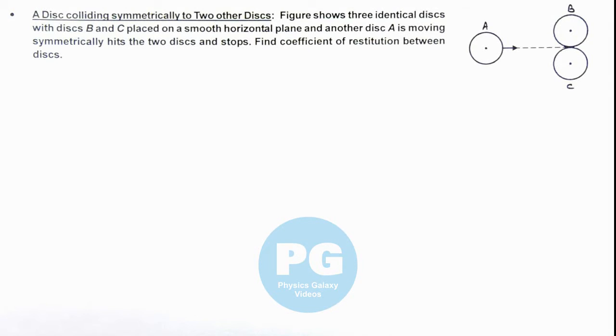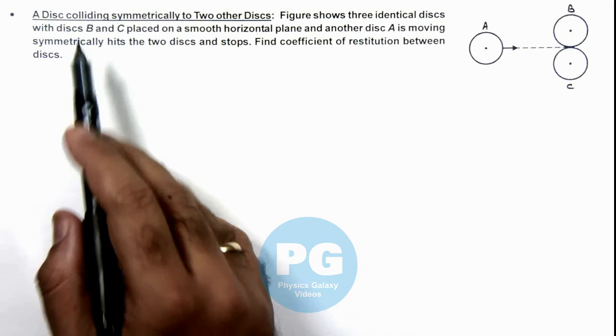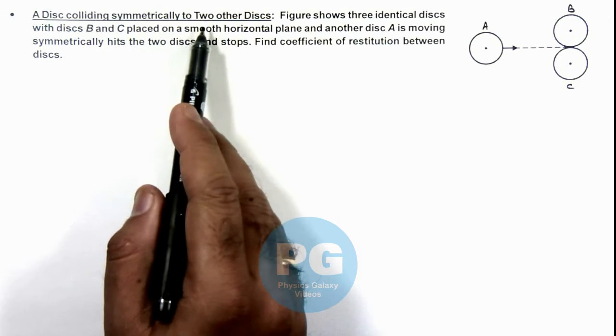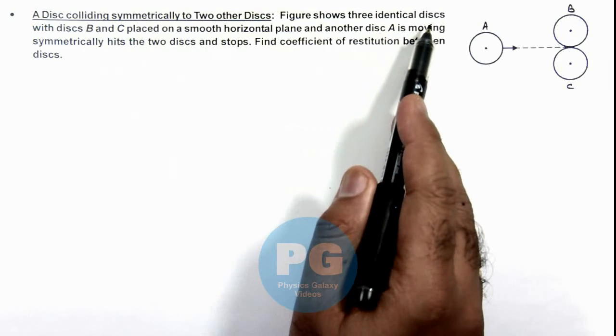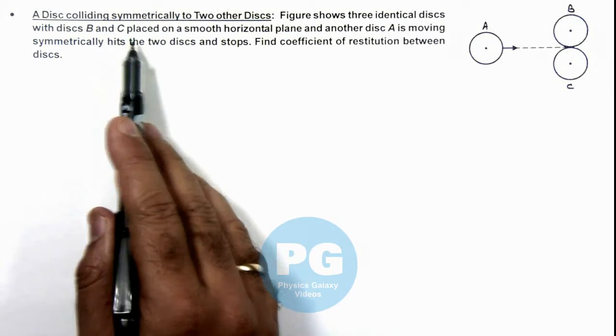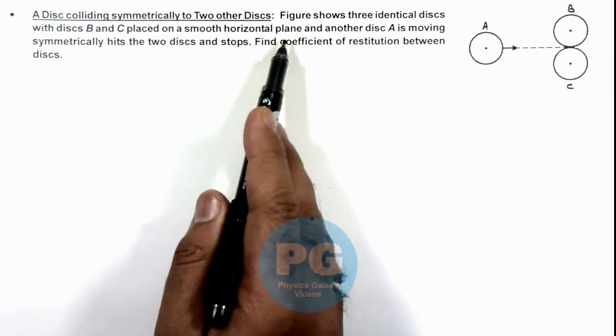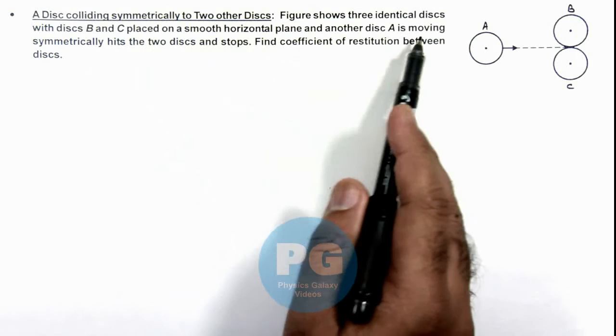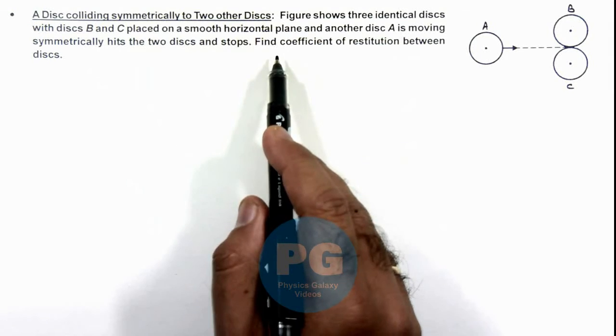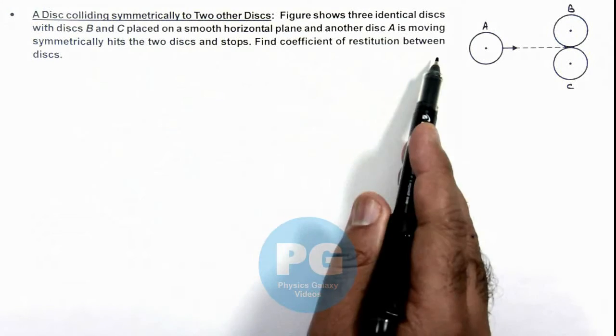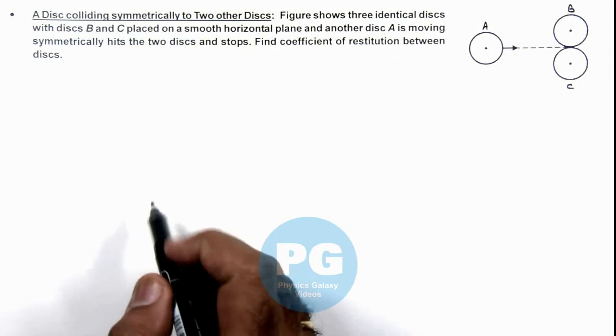In this illustration, we'll discuss a disc colliding symmetrically with two other discs. The figure shows three identical discs, with disc B and C placed on a smooth horizontal plane, and another disc A moving symmetrically, hitting the two discs and stopping. We are required to find the coefficient of restitution between these discs.